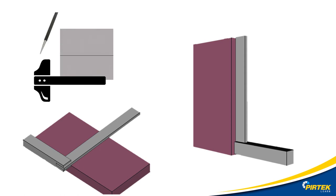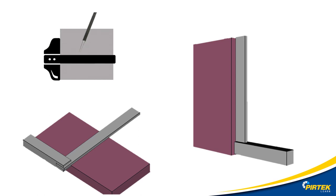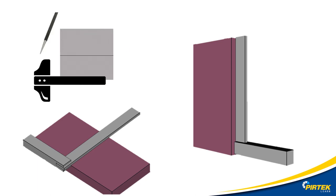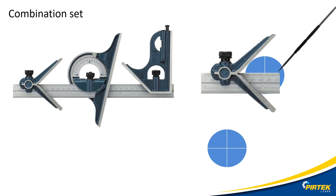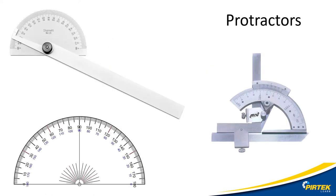T-squares are commonly used as straight edges for marking 90-degree lines or for checking and setting squareness. Closely related to the engineer square is the combination set, which enables you to scribe lines at any angle and is very useful for finding the center of holes and shafts. Although we can check and scribe angles with the combination set, sometimes protractors may be required to get the job done.